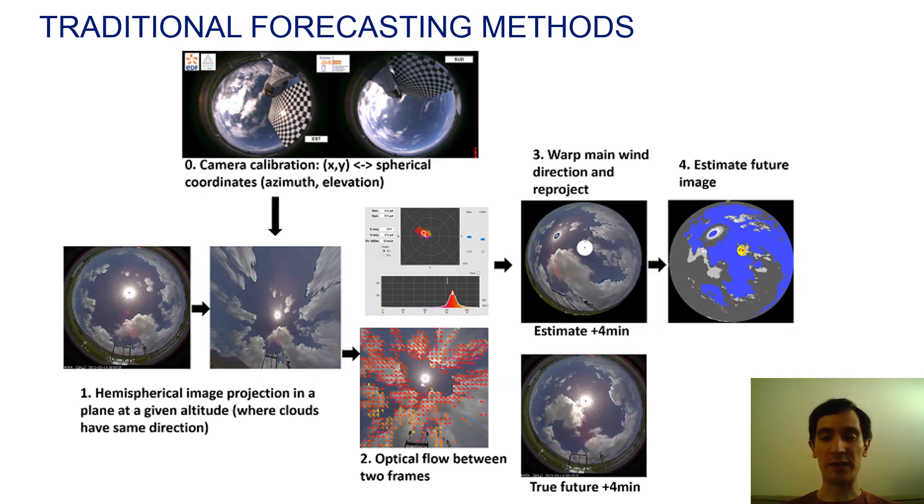Then, we compute the optical flow between two images to get the cloud motion. And finally, we compute the future image by warping this motion into the future.